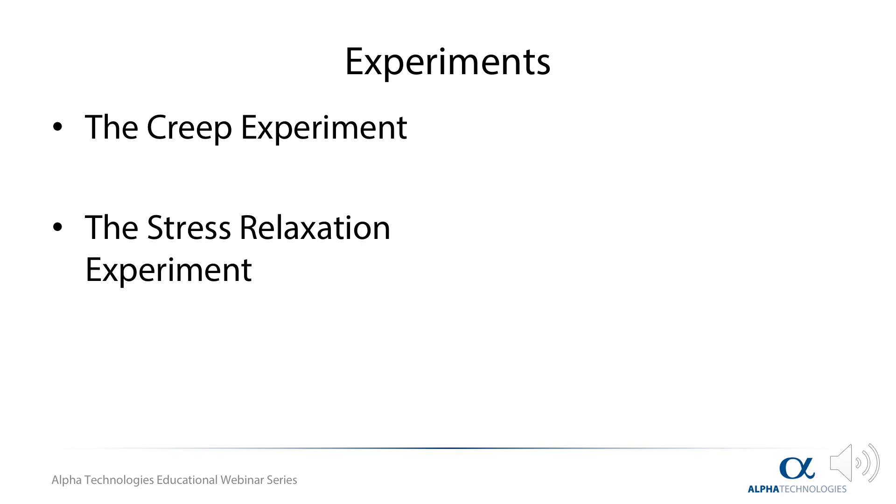First off, we have the creep experiment. The creep experiment measures the change in strain over time after applying a given stress on the specimen. Creep is generally divided into three stages. The primary creep starts at a rapid rate and slows with time. The secondary creep follows a relatively uniform rate, and the tertiary creep has an accelerated creep rate which goes to zero when the material reaches failure.